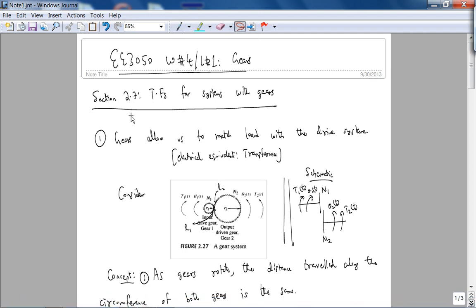Today we're covering section 2.7 from the book: transfer functions for systems with gears. Gears allow us to match load with the drive system. The electrical equivalent, as Scott correctly mentioned, is a transformer. Consider this picture from your book where you have two gears.